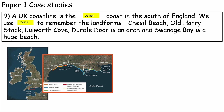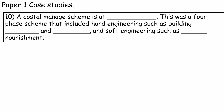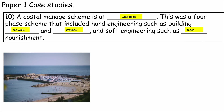Number ten: a specific coastal management scheme is at Lyme Regis. This was a four-phase scheme that included hard engineering such as building sea walls to reflect wave energy and groynes to trap sediment transported by longshore drift. They also used soft engineering such as beach nourishment — basically putting sand back on the beach. There's a lovely photograph of Lyme Regis.